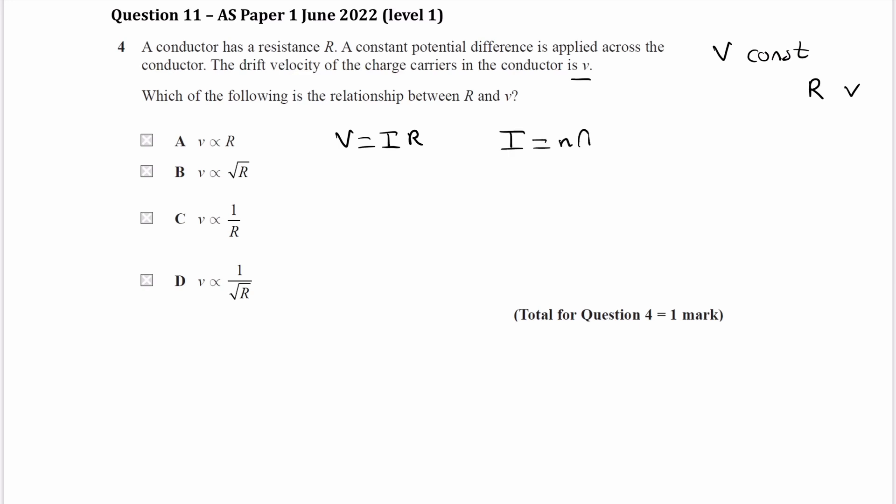And to get the drift velocity in there, we know that I is equal to nAve. We're not told anything about current in this question, so I guess we could sub this into here to get rid of the current. So we end up with V is equal to nAve times R.